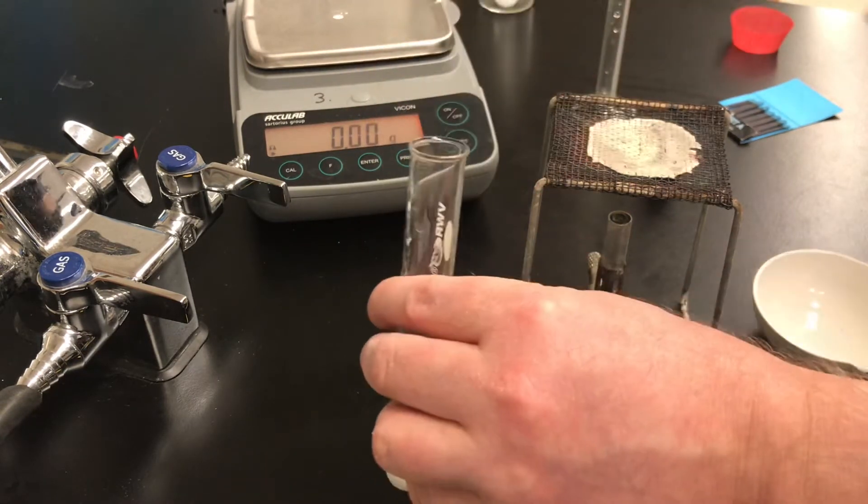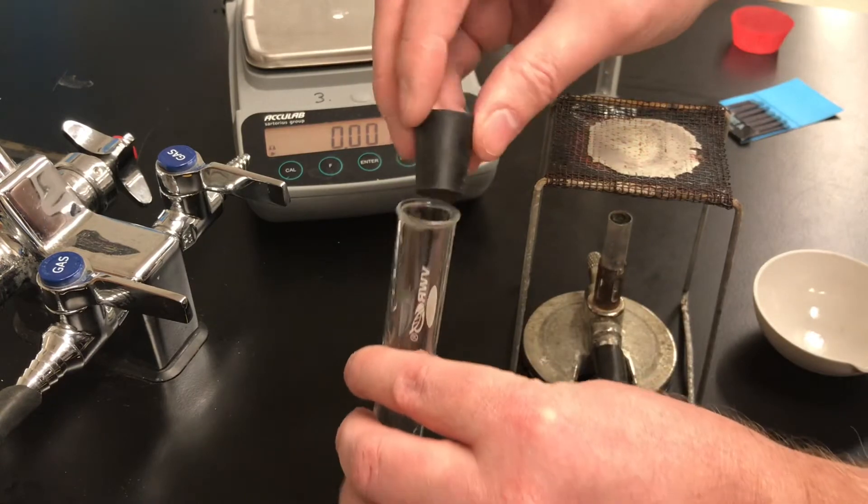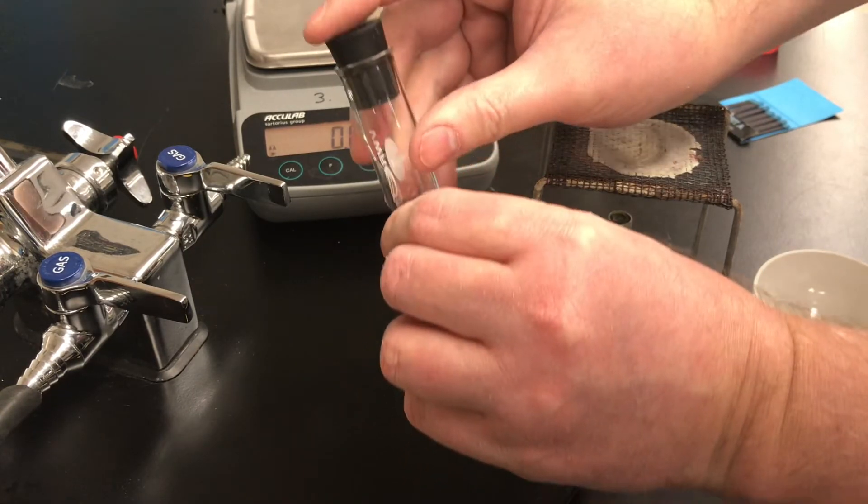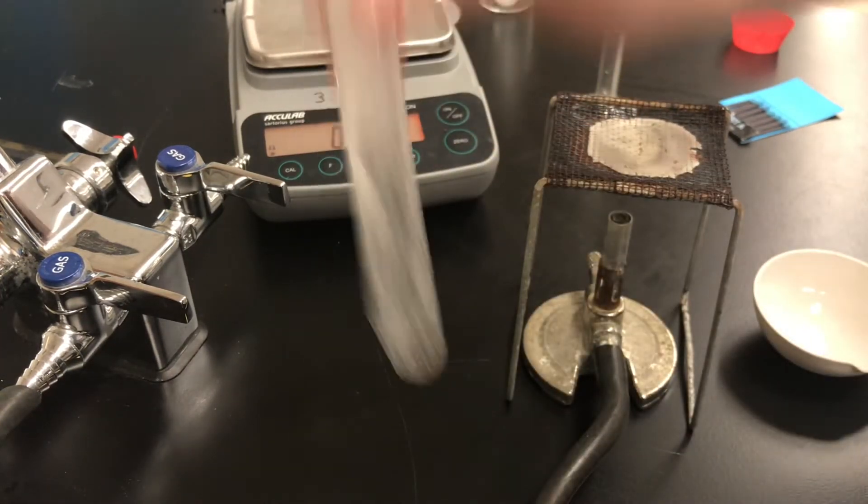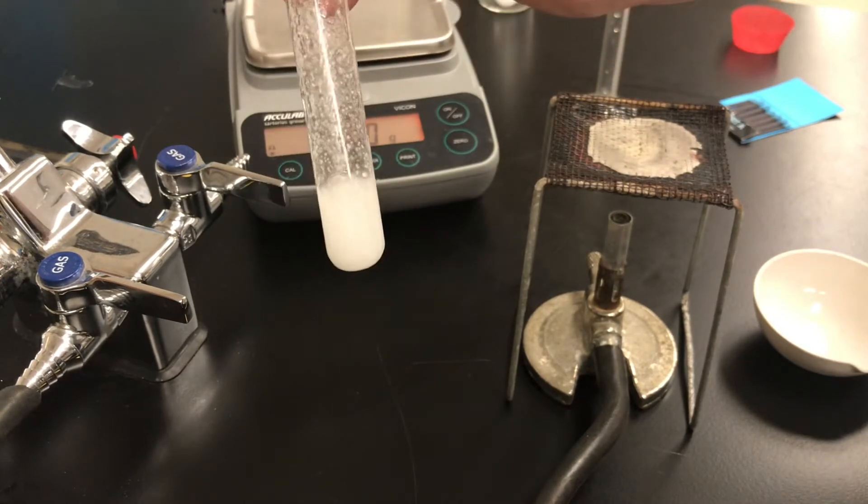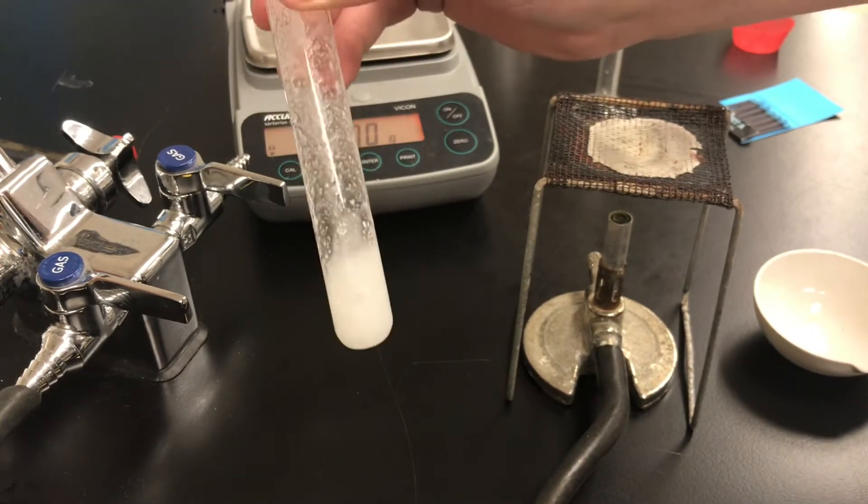We're going to take a rubber stopper and put the rubber stopper on top of the test tube and then we're going to shake for about five minutes to dissolve as much of that salt as we can.